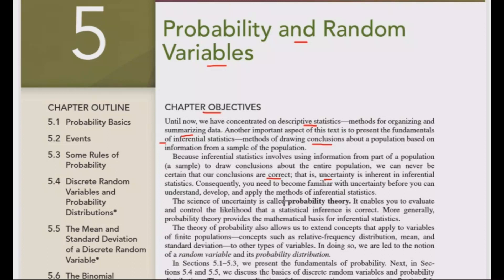Probability is the science of uncertainty. It's especially important in hypothesis testing and parameter estimation. Probability provides the mathematical basis for inferential statistics. The theory of probability also allows us to extend concepts that apply to variables of finite populations.